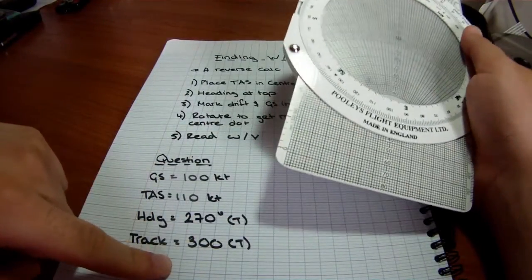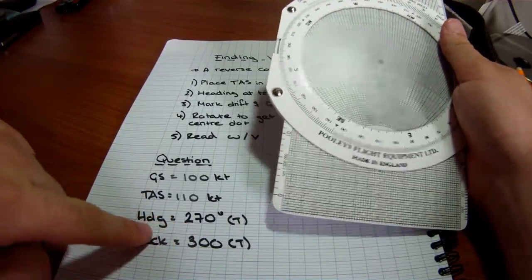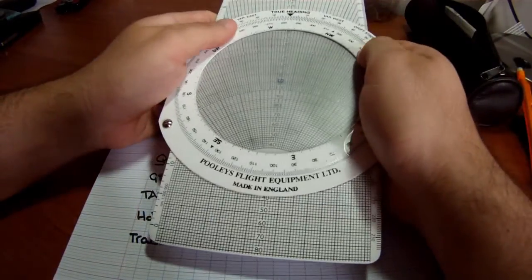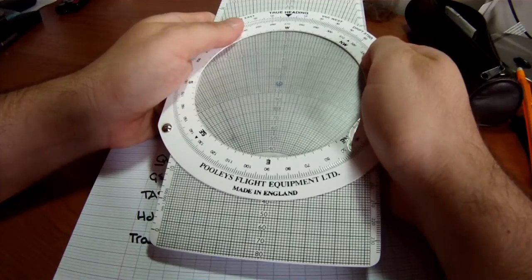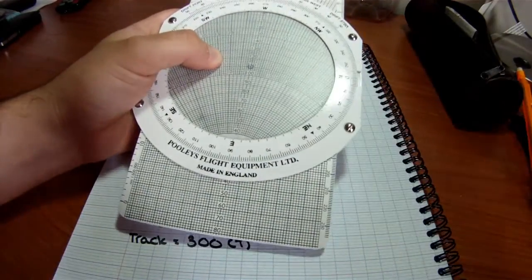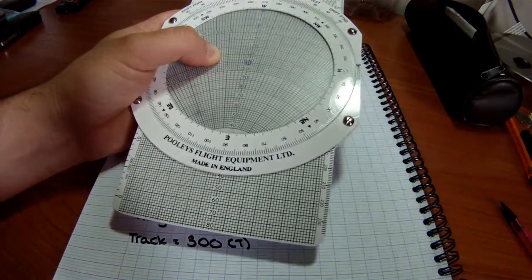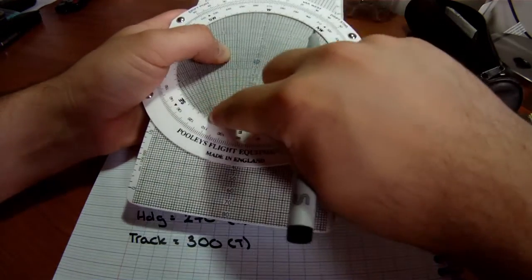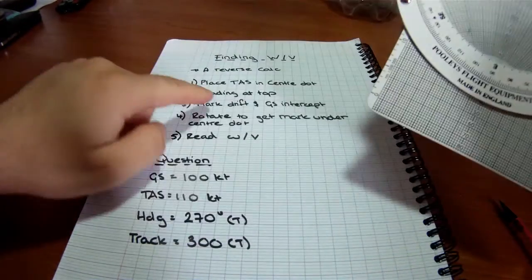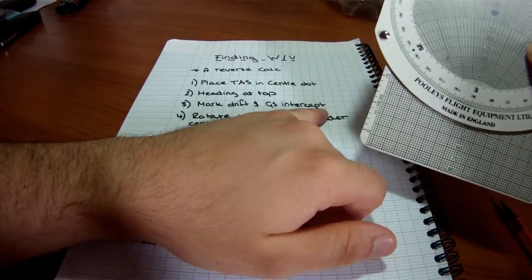Next thing you're going to do is place the heading at the top. So 270. Okay, now I do this bit slightly different than what they say. I'm going to mark both sides because now we mark drift and ground speed intercept.